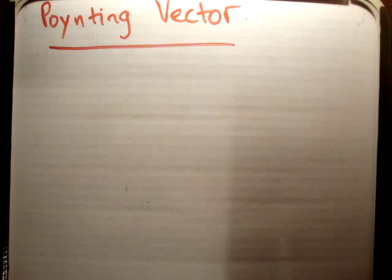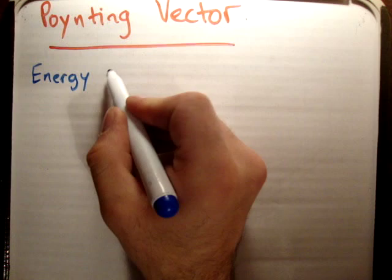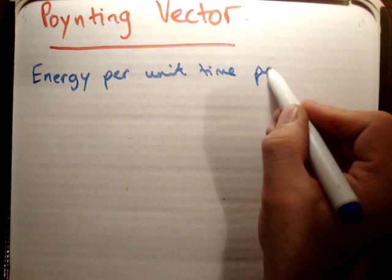In this video, I'd like to prove the expression for the Poynting vector. The Poynting vector is the vector which gives you the energy per unit time per unit area.